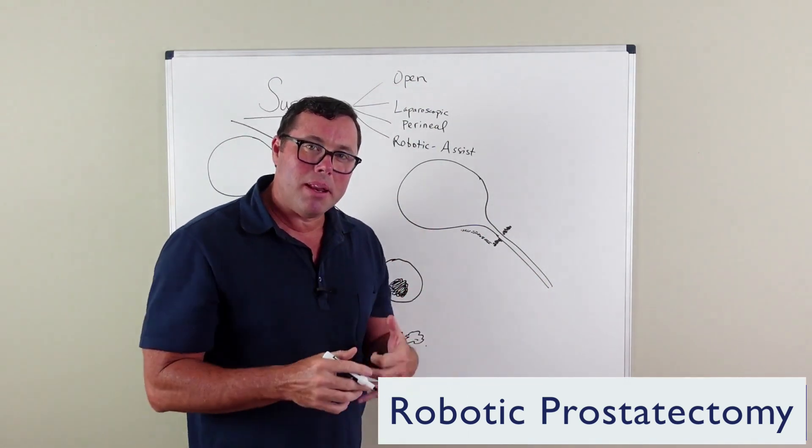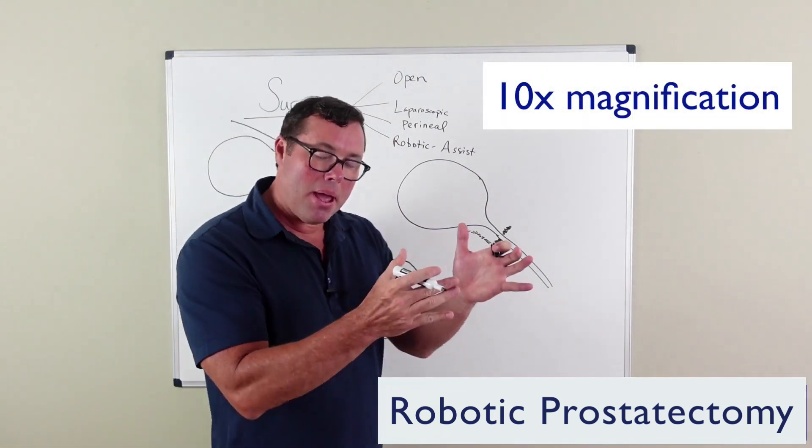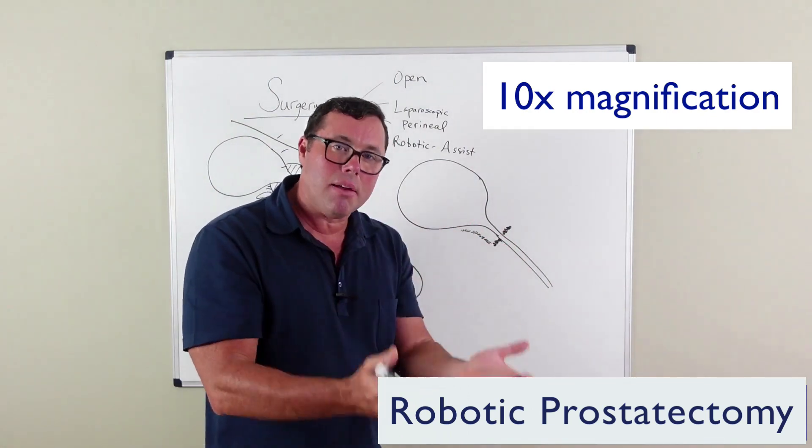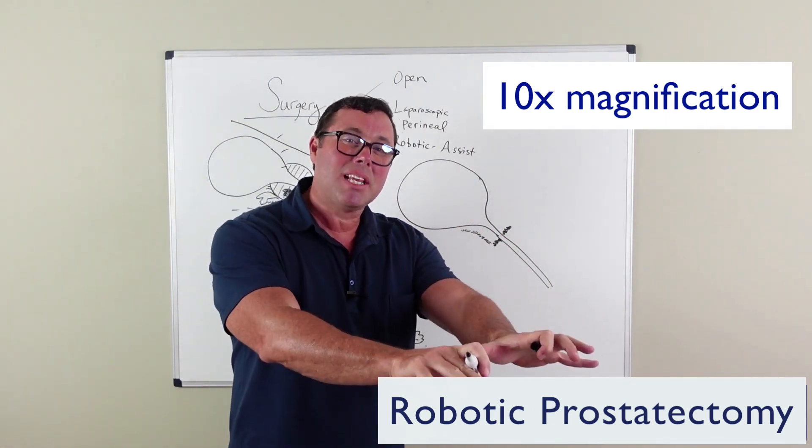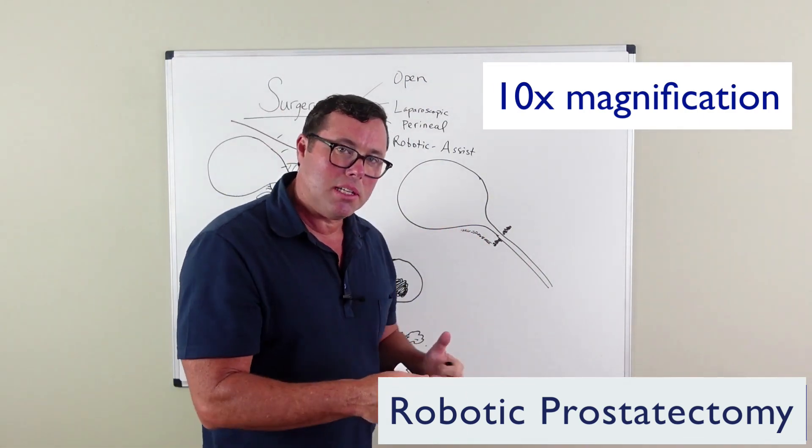One of the benefits of robotic surgery is 10 times magnification. So compared to the normal eye of a human, you can zoom up tenfold on the robot so you can see structures in incredible detail.